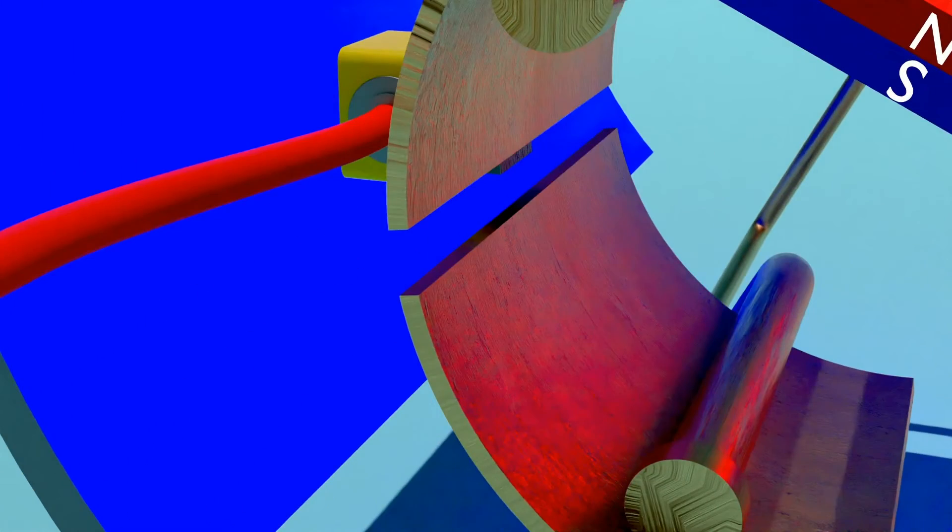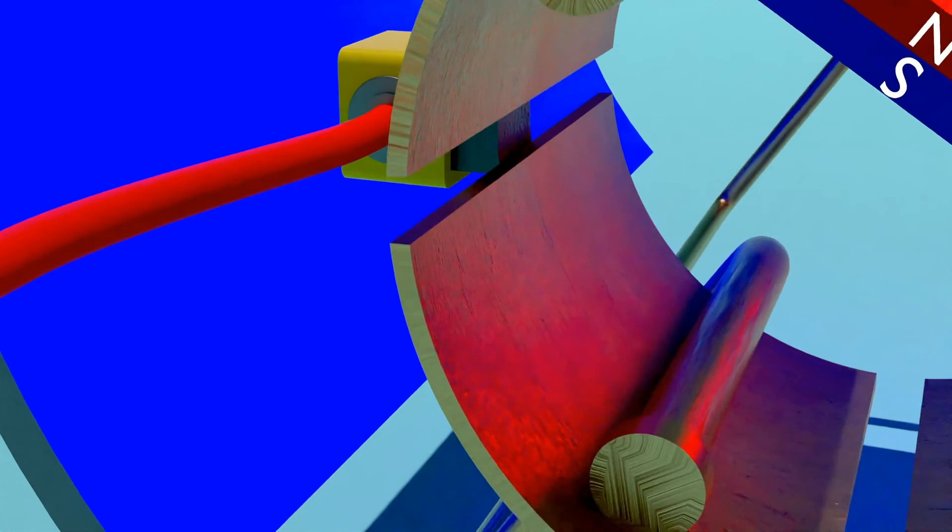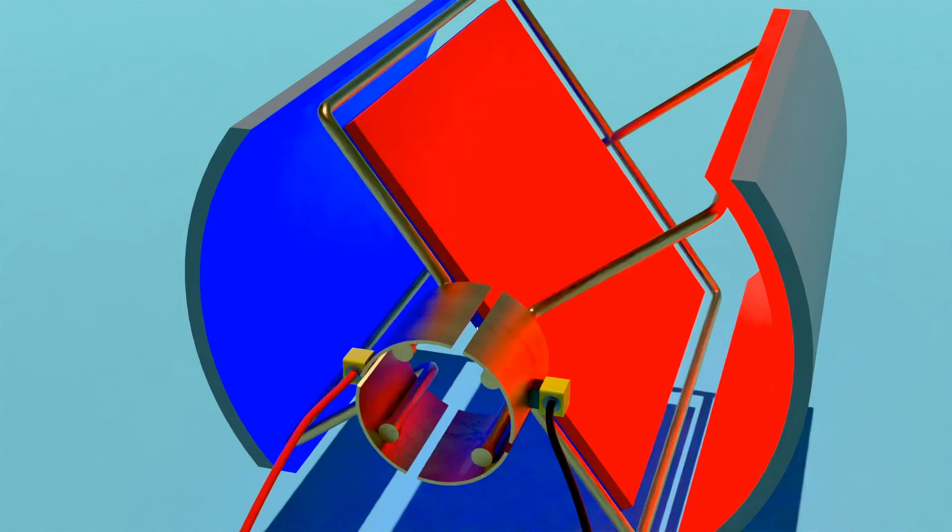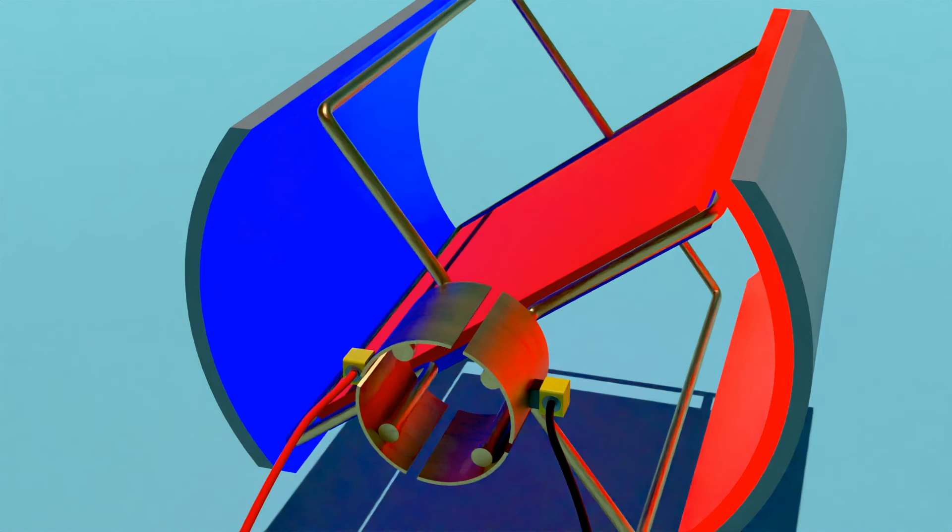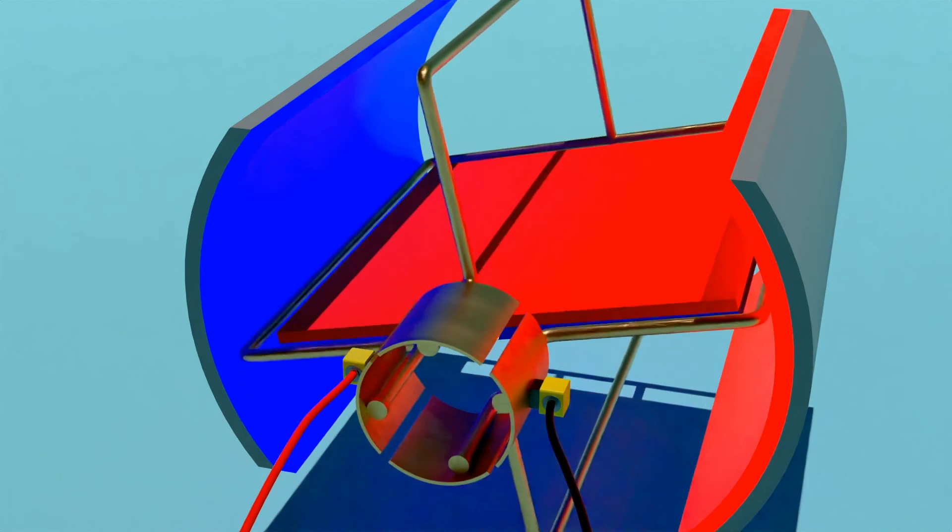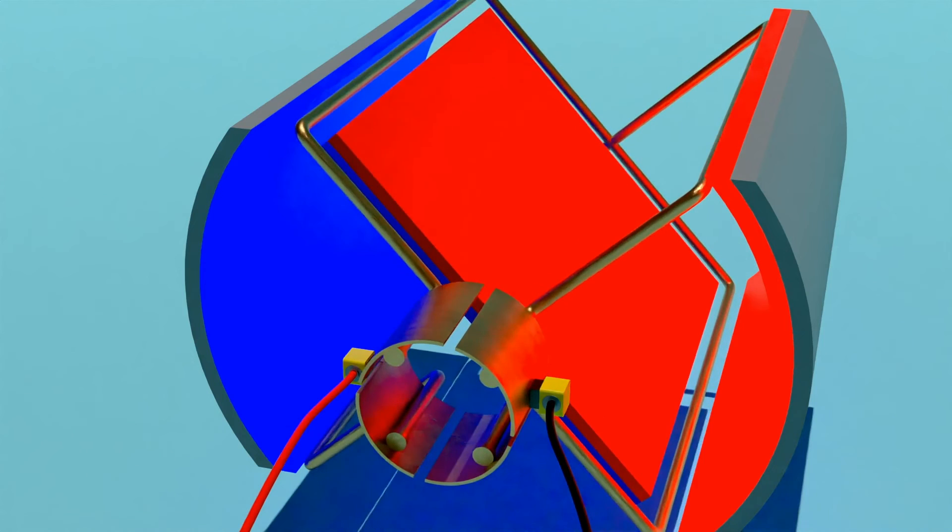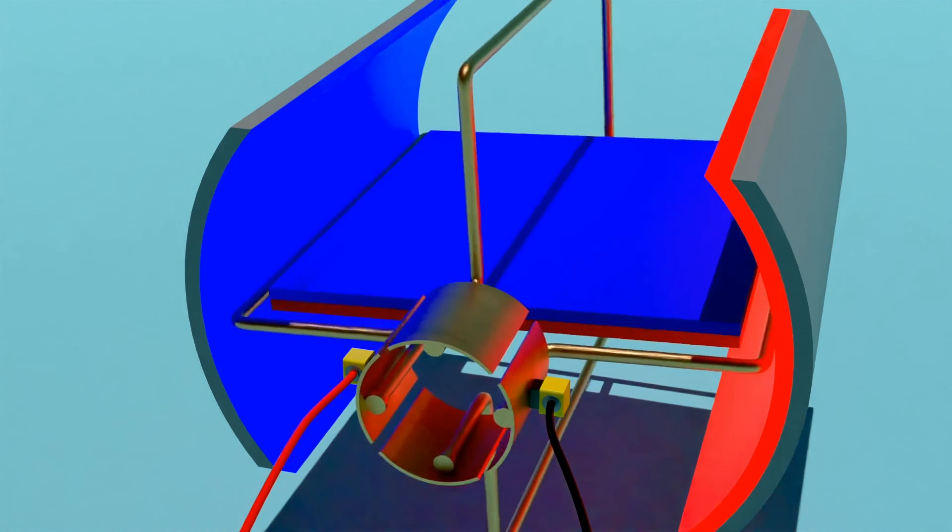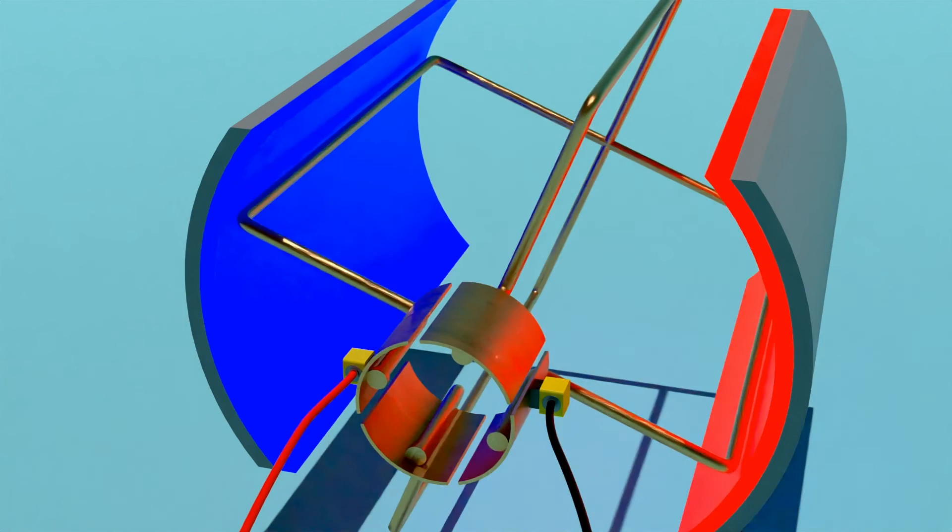Once we get to here, the brushes switch contact to the next pair of the commutator segments, which means this loop turns off and the next loop turns on. Now this electromagnet wants to spin. The brushes switch contact and the next loop turns on. This keeps happening as our motor spins.